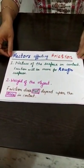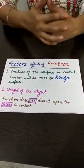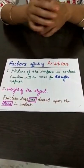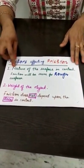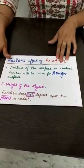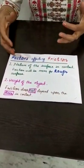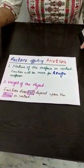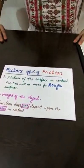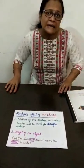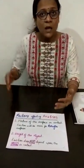There are two factors affecting friction. The first is the nature of the surface. If the surface is rough, there will be more friction between those two surfaces. If the surface is smooth, things can slip over them and the friction will be less. The second factor is the weight of the object. If the object is heavier, the friction will be more; if it is lighter, the friction will be less.